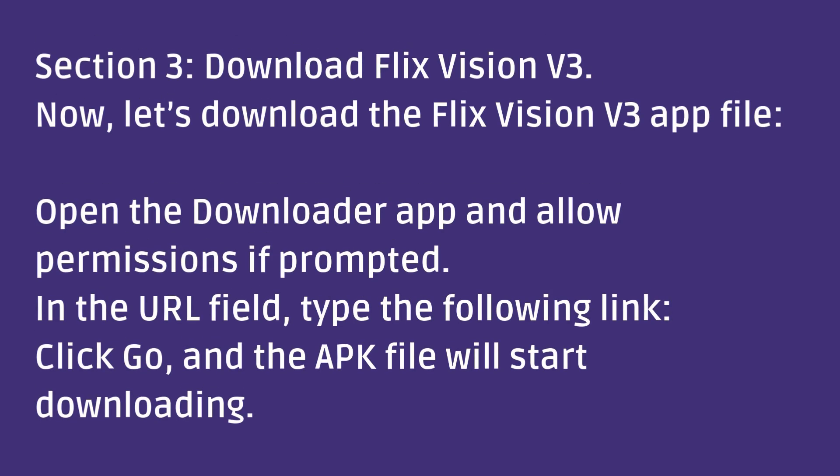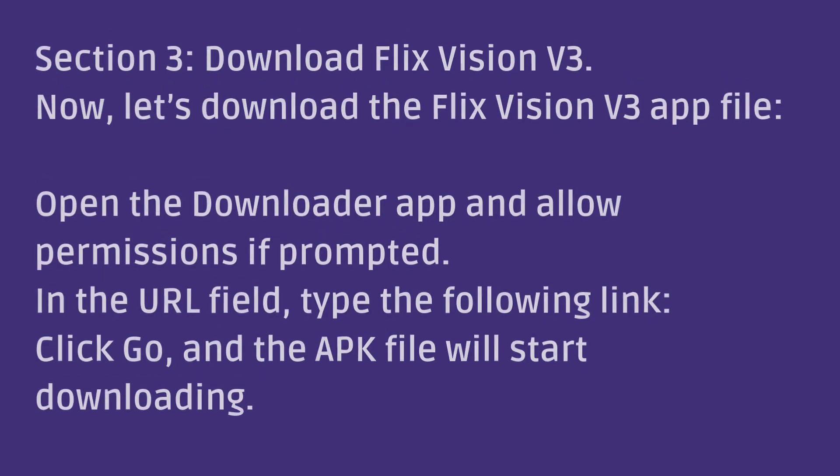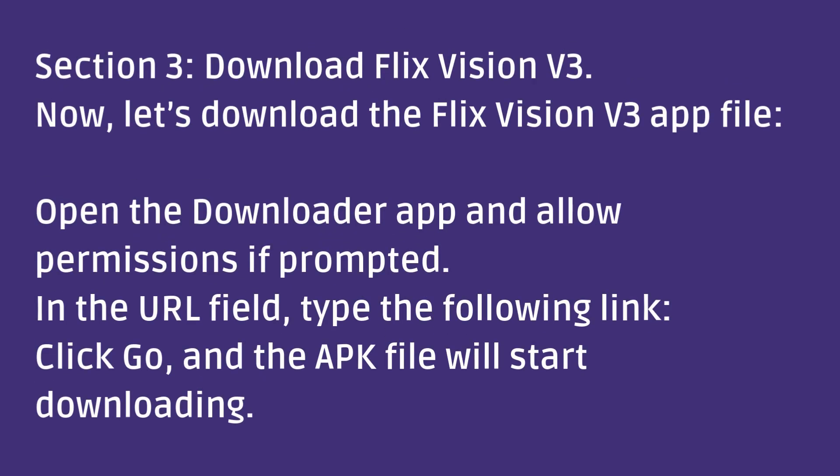Download FlixVision V. Now let's download the FlixVision V app file. Open the Downloader app and allow permissions if prompted. In the URL field, type the following link, then click Go, and the APK file will start downloading.